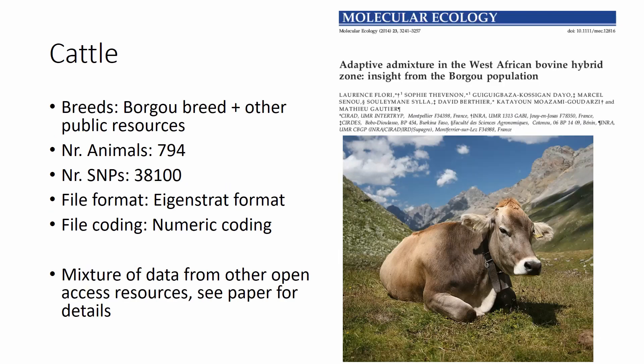Another dataset is from the journal Molecular Ecology, and this involves animals from the boar group breed, with what seems to be other public resources also attached to the data. We speak about almost 800 animals and 38,000 SNPs. The file format in this case is EIGENSTRAT with numeric coding. I'm quite sure that some quality control was already involved here, so check the paper for more details.